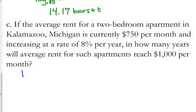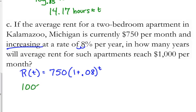So let's set up our model. We'll say R of T, since we're talking about rent. It is currently $750 per month, so that's the initial, times 1 plus, because it's increasing, at a rate of 8%. Well, 8% as a decimal is 0.08 raised to the T. In how many years will the rent reach $1,000? So we're going to set that model equal to $1,000.